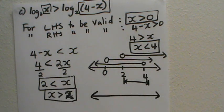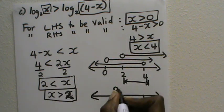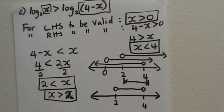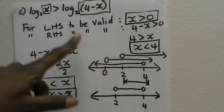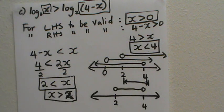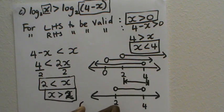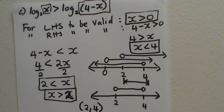So the solution on the number line is an open circle at two, shaded all the way to four with an open circle at four. Any number between two and four substituted into the inequality will make it hold. In interval notation, since two and four are not included, we write this as the open interval from two to four with round brackets: (2, 4).